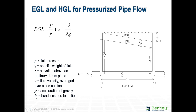Minor losses occur if you have a change in diameter — for example, the pipe suddenly got smaller — or maybe there is a T or something like that. They are called minor because in comparison to friction they're very small. The energy grade line is shown above, and below the non-dotted line is the hydraulic grade line, which is the same as the energy with the exception of the velocity head.